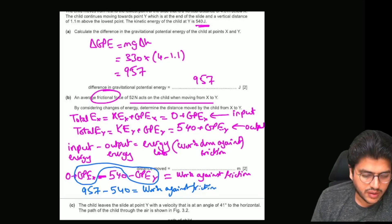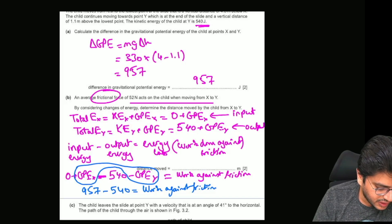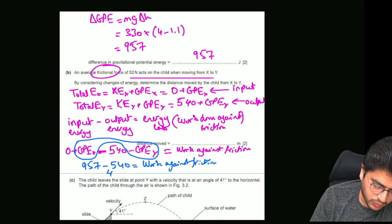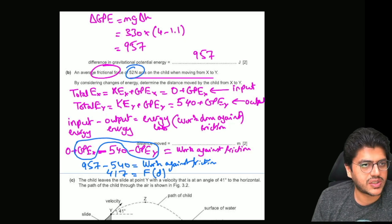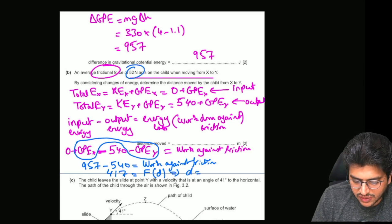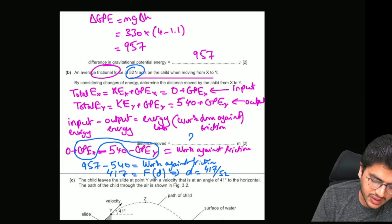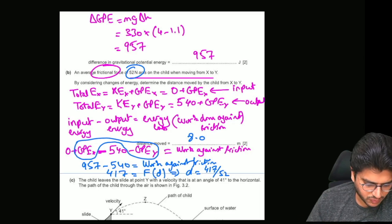Now, 417 equals force times distance. They've asked for the distance and told you the average resistive force is 52 Newtons. So divide 417 by 52, and the distance traveled is approximately 8.0 to 8.1 meters.